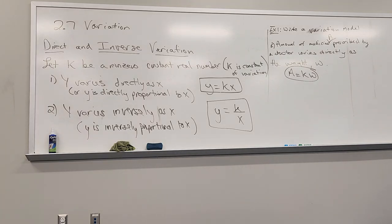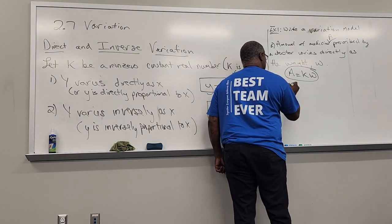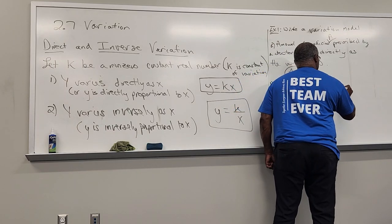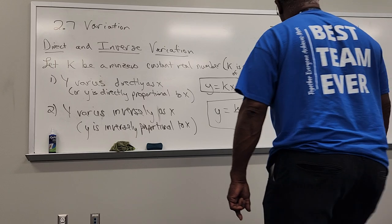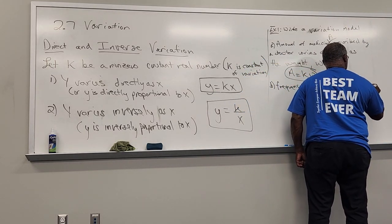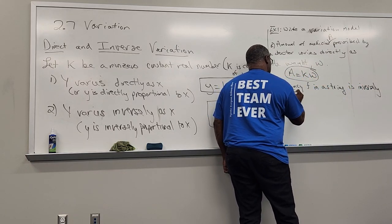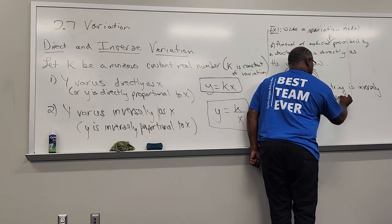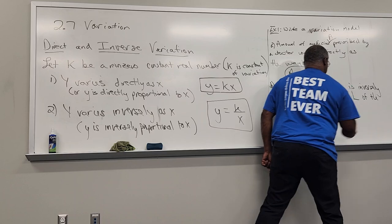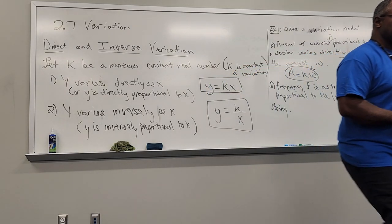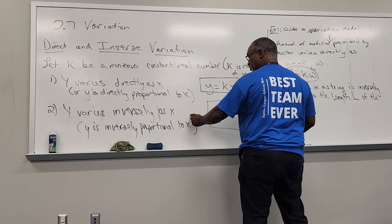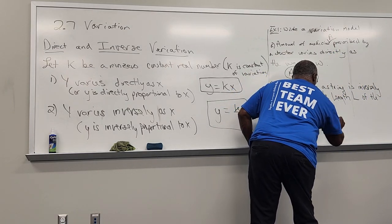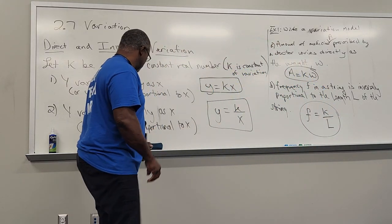Part b: the frequency f of a vibrating string is inversely proportional to the length L of the string. This is inverse proportionality, so we write f equals k over L. That's how we represent this inverse relationship.